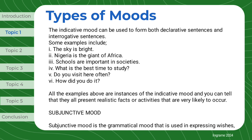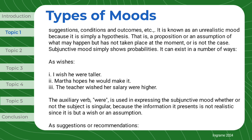Subjunctive mood is the grammatical mood that is used in expressing wishes, suggestions, conditions, and outcomes. It is known as an unrealistic mood because it is simply a hypothesis — that is, a proposition or an assumption of what may happen but has not taken place at the moment, or is not the case. Subjunctive mood simply shows probabilities, and it can exist in a number of ways.